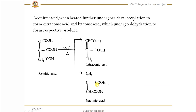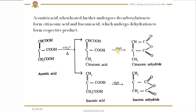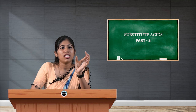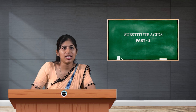The reaction does not stop there. Both citraconic acid and itaconic acid then undergo dehydration — removal of a water molecule takes place once again. The OH from one carboxylic group and hydrogen from the other carboxylic group are removed, and a new bond forms, giving citraconic anhydride from citraconic acid and itaconic anhydride from itaconic acid. These may look like big structures, but just focus on where the reaction takes place and what product is formed — concentrate on the bonds, and it becomes easy.